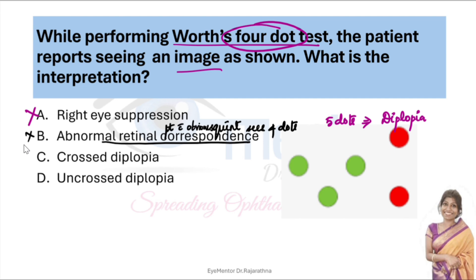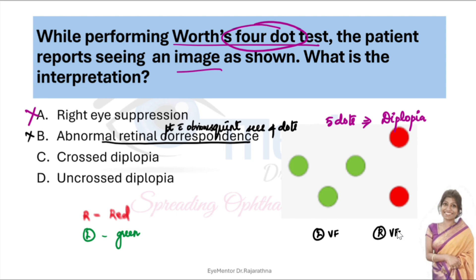Now, crossed diplopia or uncrossed diplopia. The patient's right eye is wearing red and the left eye is wearing green. When you look at the image, this is his left visual field and this is his right visual field — depicting the patient's vision. Left side he is wearing green and right side he is wearing red, so as it is he is seeing. This is uncrossed diplopia. If it were crossed diplopia it would be the other way around.